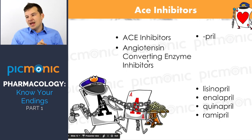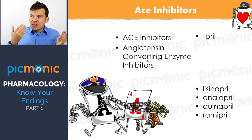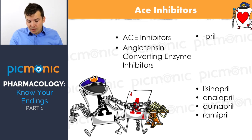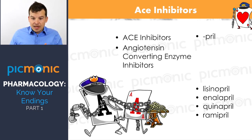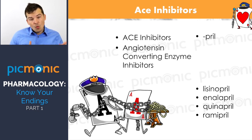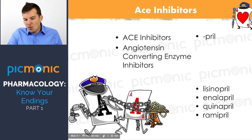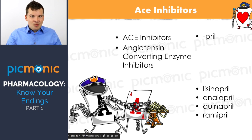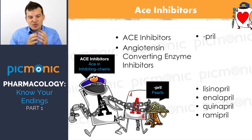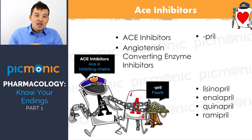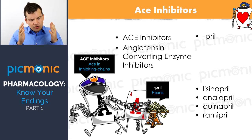Next up: ACE inhibitors — angiotensin converting enzyme inhibitors. ACE is located in the lung and prevents the conversion of angiotensin 1 to angiotensin 2. In Picmonic we have an ACE card with inhibiting chains and pearls, because ACE inhibitors end in -pril — P-R-I-L. Just by memorizing that drug ending, you can identify many different ACE inhibitors.